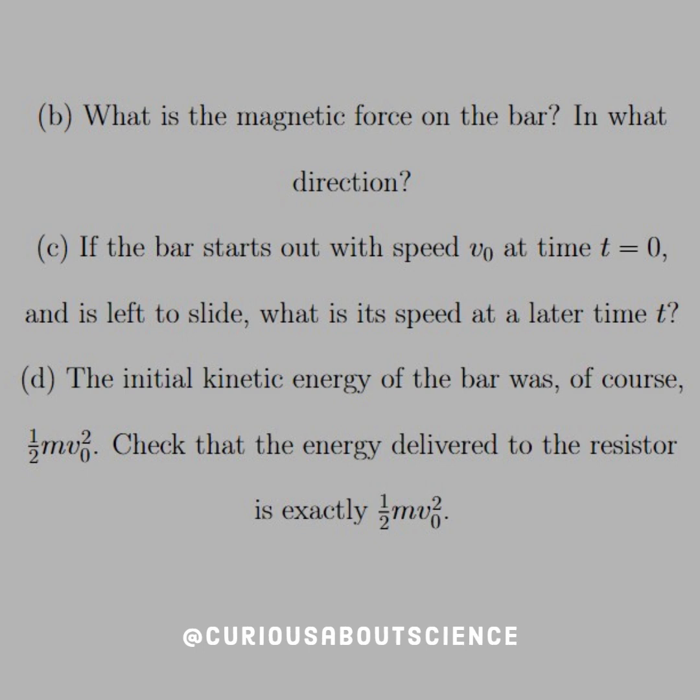And then D, the initial kinetic energy of the bar was, of course, one-half MV squared. Check that the energy delivered to the resistor is exactly one-half MV squared. Alright, well, when in doubt, let's draw it out.